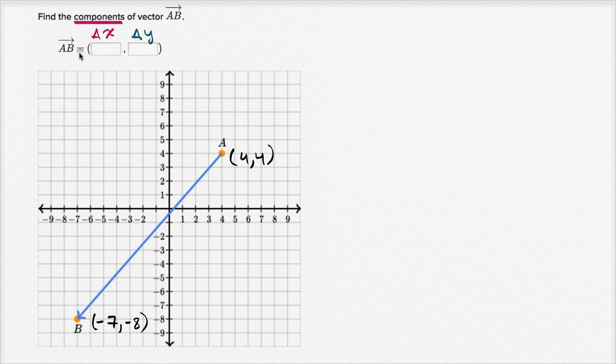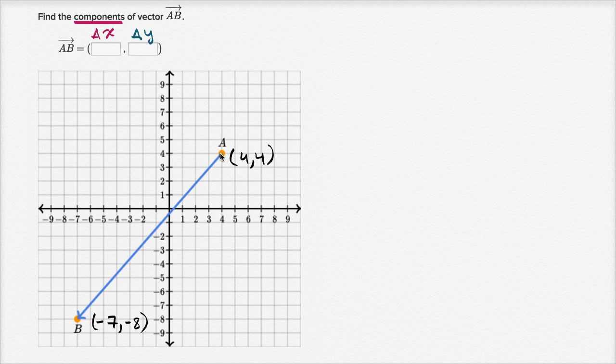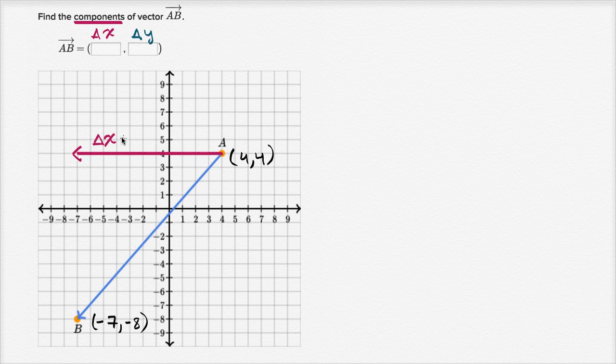And like always, I encourage you to pause the video and try to work through it on your own. Well, let's see, if we're starting at four, we're going from x equals four, that's where we're starting, to x equals negative seven. So that right over there is our change in x. And there's a couple of ways you could compute that.